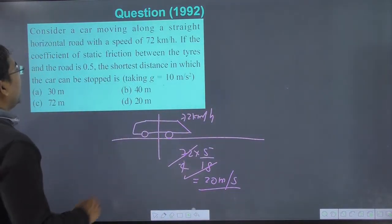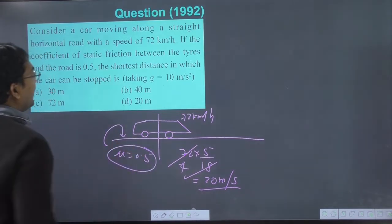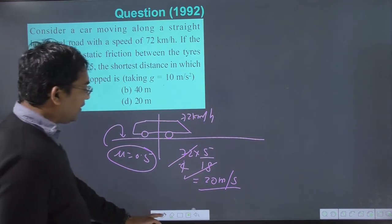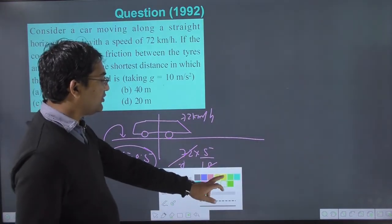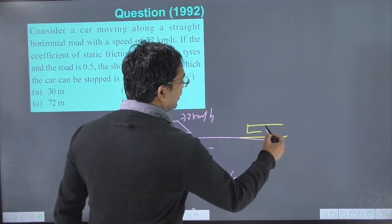The coefficient of friction between the tire and road is μ, which is 0.5. Now we need to find the shortest distance in which the car can be stopped. The car is here with this speed.